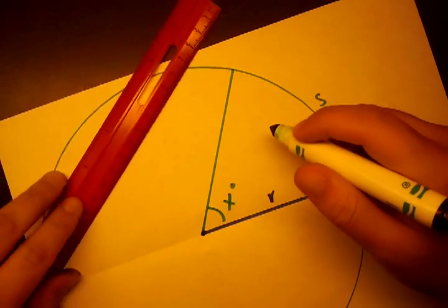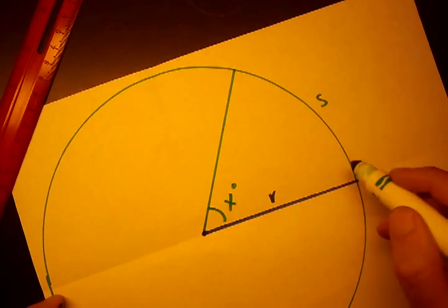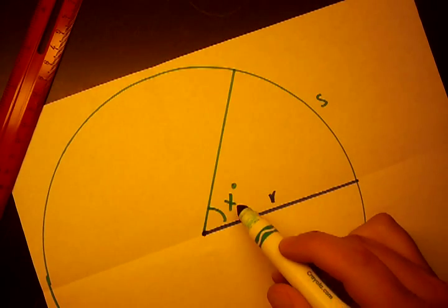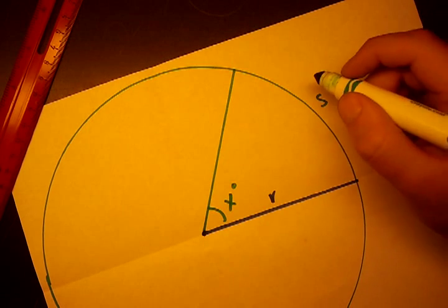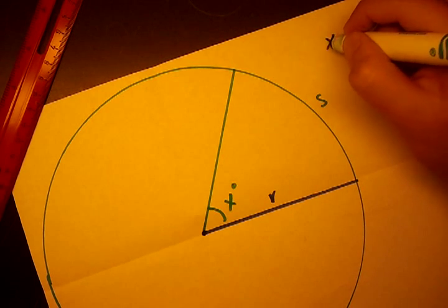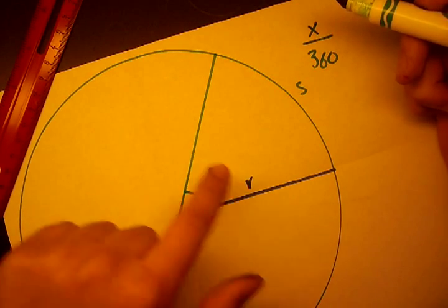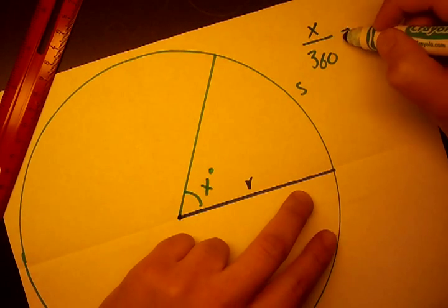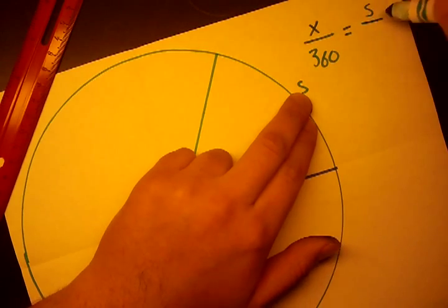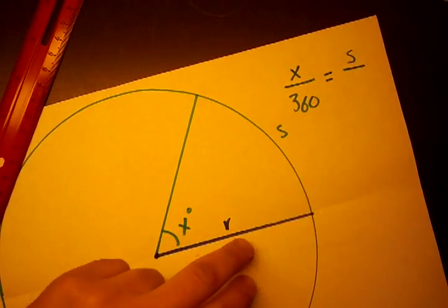So, we see that if this angle was 180, then s would be half the circumference, and x would be 180 degrees. So, we see that there's a ratio. So, x over 360. That means the angle divided by the full rotation angle equals that small arc length over the full arc length, or the circumference, which is 2πr.